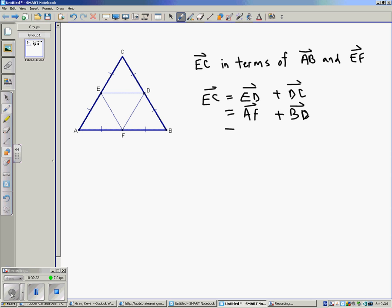Vector AF can be replaced with vector one-half AB. Similarly, vector BD can be replaced with vector FE. Got it so far?